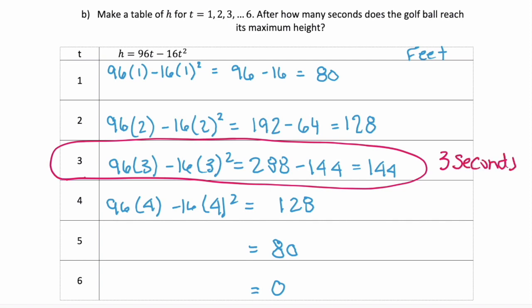Now if you think about it, this makes sense. A golf ball starts on the ground, it gets hit, and follows this parabola shape, and then it comes back down to the ground. So the maximum height or the vertex is going to be in the middle.